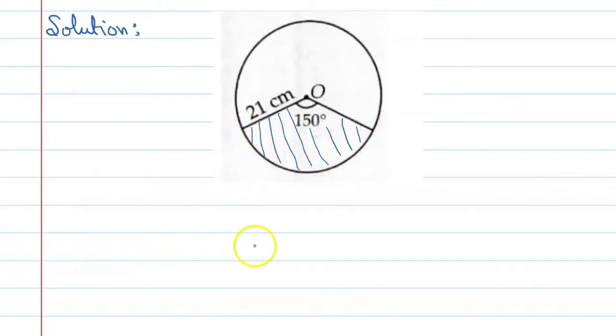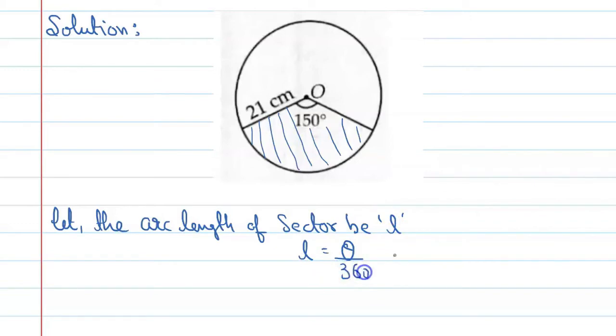So, let the arc length of sector be L. So, L is equal to theta upon 360 into 2 pi r. This is the formula. Now, put these values and you will get